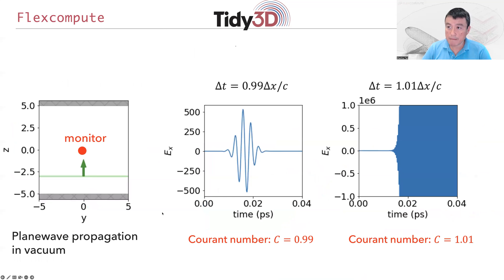In our example, when we choose Δt to be 0.99 times Δx over c, this is a Courant number below one and we get stable behavior. If it's above one, as in this example on the right, you see unstable behavior.